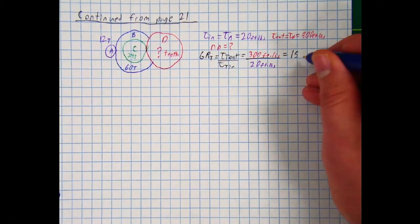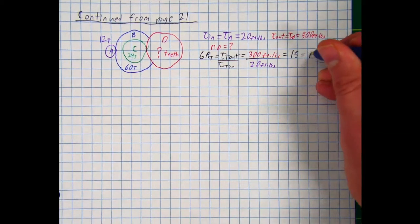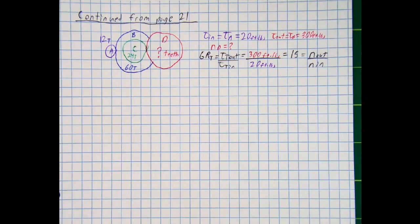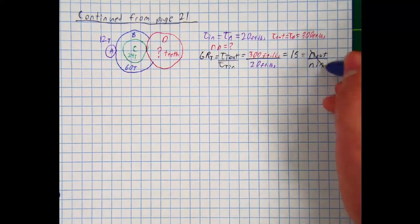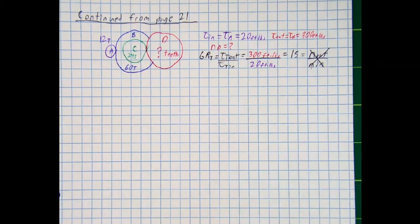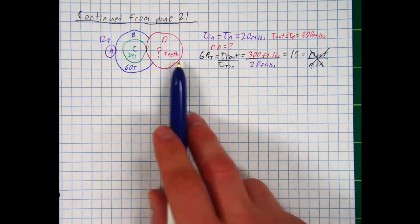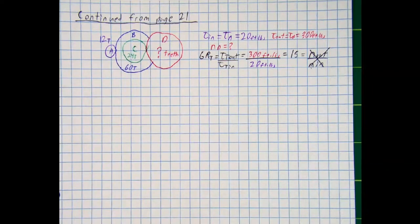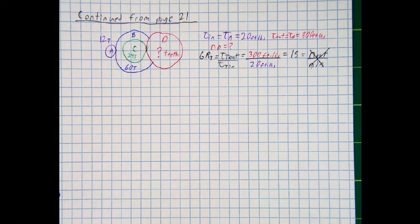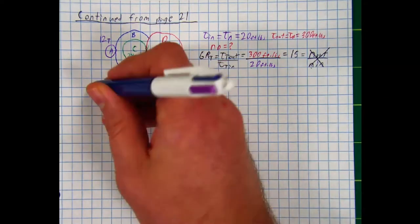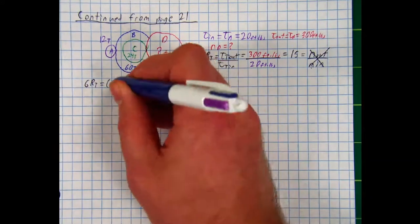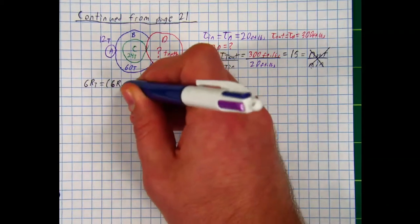Now, you might be tempted to just put this equal to the number of teeth output divided by the number of teeth input. But this would not actually work. We've discussed this in the past. But this is not the formula for the total gear ratio. Instead, it is the formula for the simple gear trains. And so we can't use that to solve for our number of teeth. But what we can do is we can use another version of the gear ratio total formula.